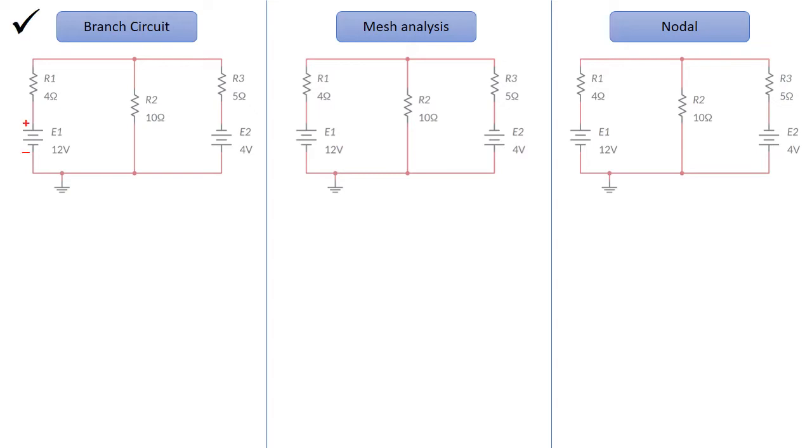Starting with branch circuit, the first thing we do is identify the sources, then we put the polarities and assign the polarities of these sources. As you can see here, we have two sources, E1 and E2, and we have the polarities, as can be seen on the screen.